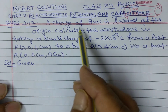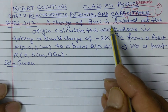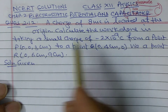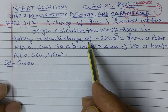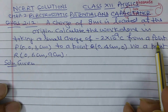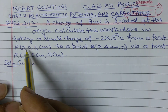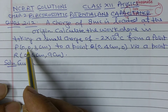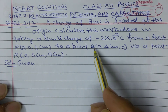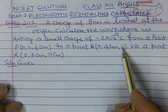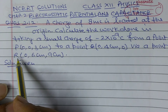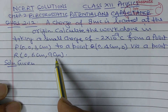Question number 12: A charge of 8 millicoulomb is located at the origin. Calculate the work done in taking a small charge of minus 2 into 10 to the power minus 9 coulomb from a point P, with coordinates (0, 0, 3 cm), to a point Q with coordinates (0, 4 cm, 0), via a point R with coordinates (0, 6 cm, 9 cm).